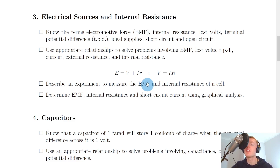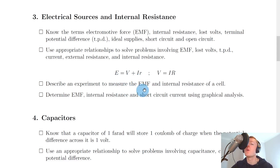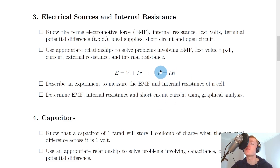We essentially have our equation relating EMF and internal resistance: E equals V plus Ir, where capital E is the EMF, capital V is the terminal potential difference, I is the current, and small r is the internal resistance. We can also say that the terminal potential difference V is equal to IR — that's just Ohm's law. The top tip is that you can substitute for V into the EMF equation to get an expression in terms of current, internal resistance r, external resistance R, and the EMF E.